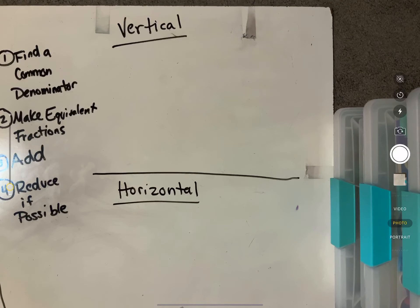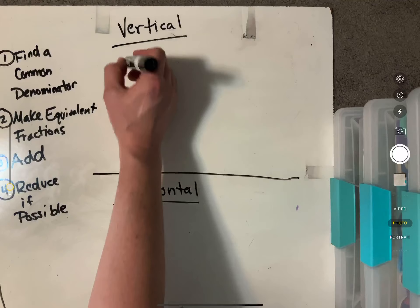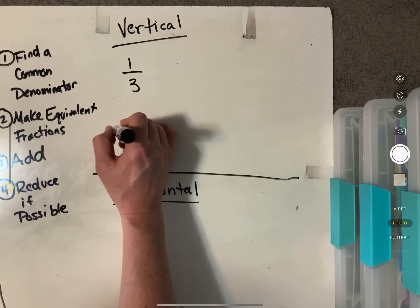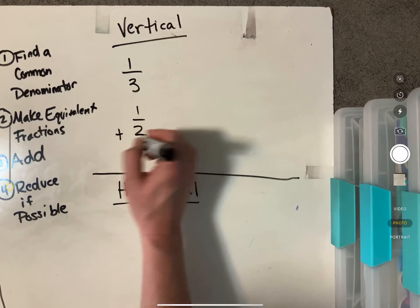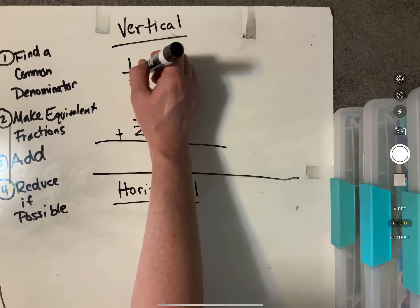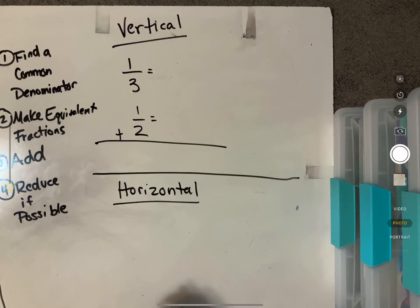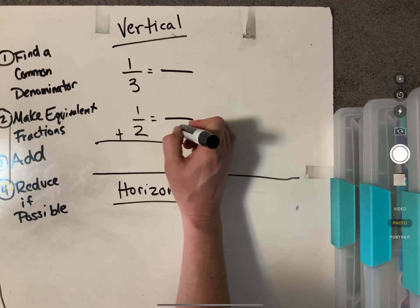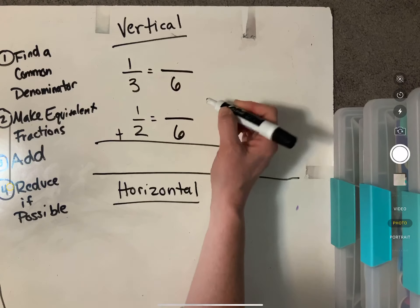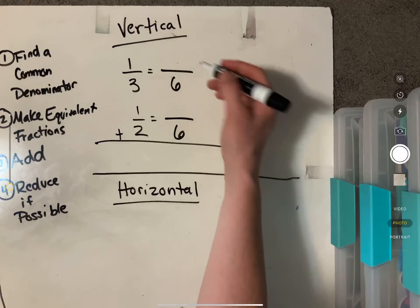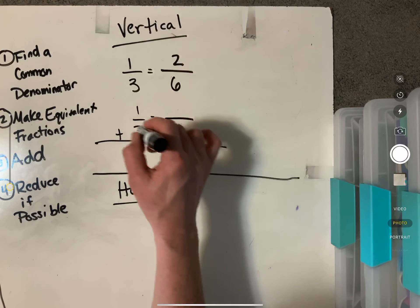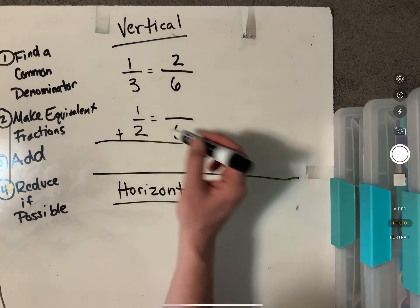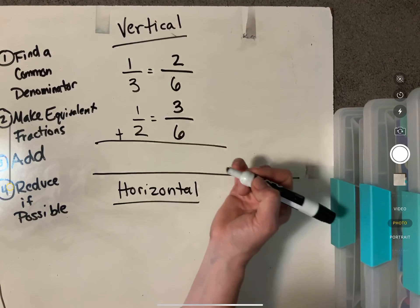So let's do one third plus one half. So first we have to find our common denominator. The common denominator or the LCM with this for three and two would be six. So six and six, three times two would be six. One times two is two. Two times three is six. One times three is three.